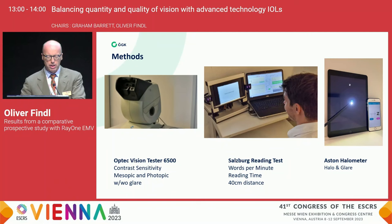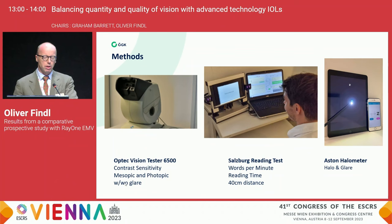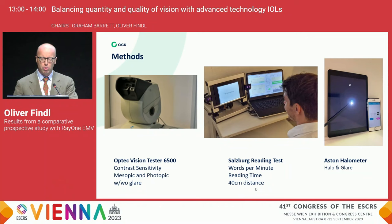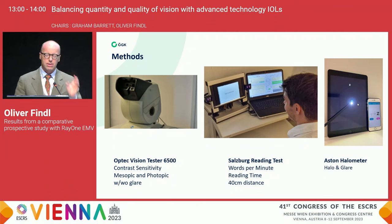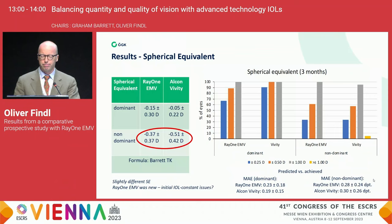We used the OPTEC Vision Test 6500, which is well established for contrast sensitivity measurements, both in mesopic and photopic conditions, as well as with and without glare. We also used the Salzburg Reading Test, where the patient reads sentences and a microphone listens to assess words per minute and reading time, standardized at 40 centimeters. For assessing halos, we used the Aston Halometer, which gives a small glare source on an iPad and has the patient assess halo size — especially relevant for nighttime driving.